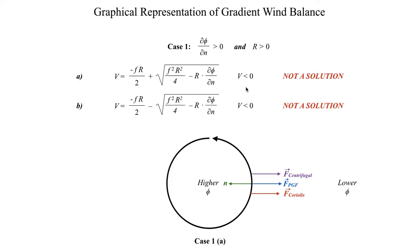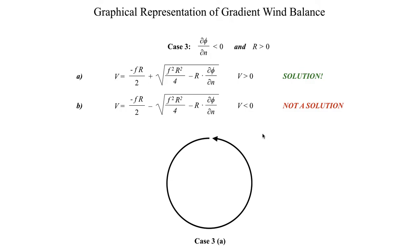That's why this first case is not physically possible — all the forces point in the same direction. Looking at case B, it's actually even worse, because in that case the solution implies a stronger velocity, making it an even more lopsided tug of war since the centrifugal and Coriolis forces are going to be stronger. I'm going to skip case two, because that will be part of your next homework assignment.